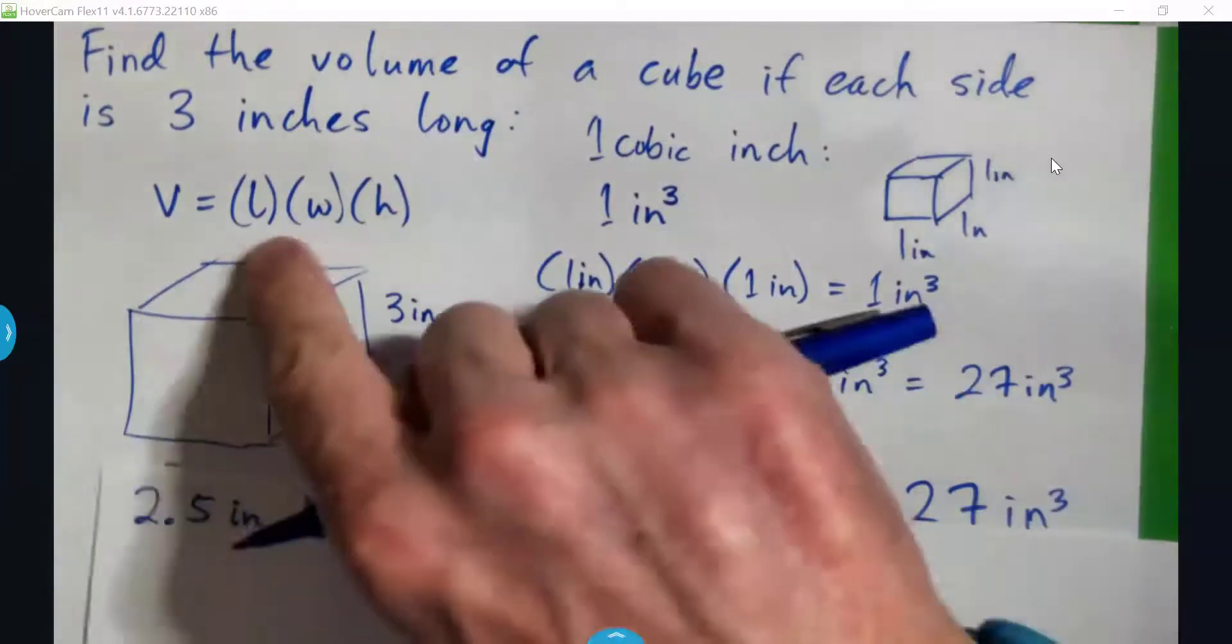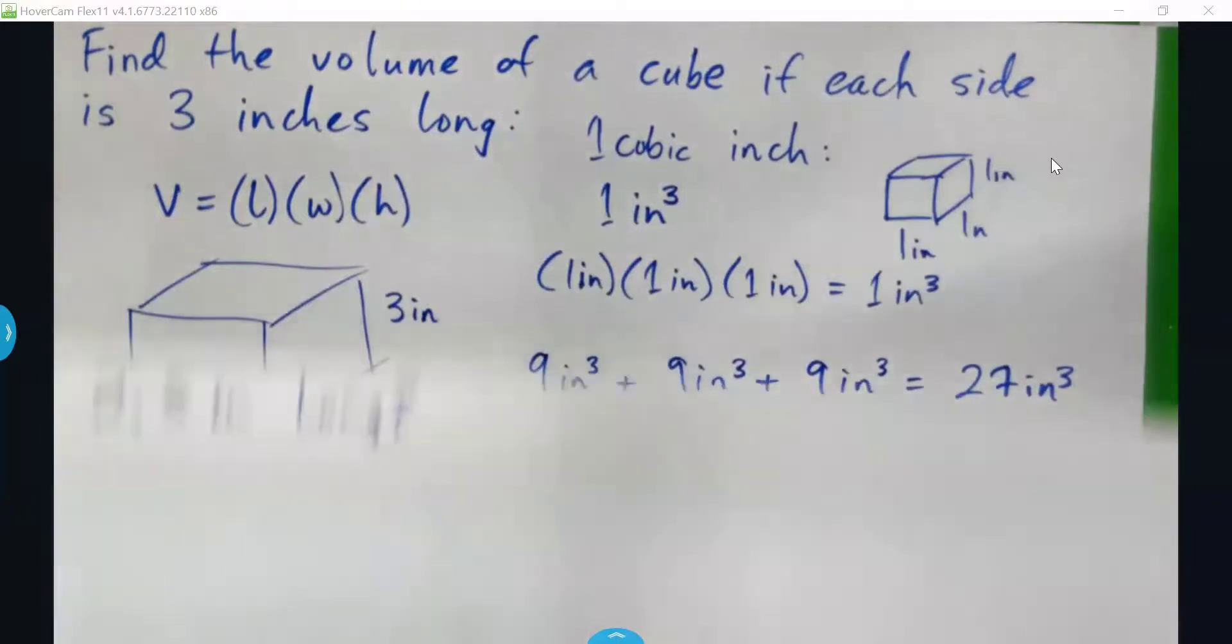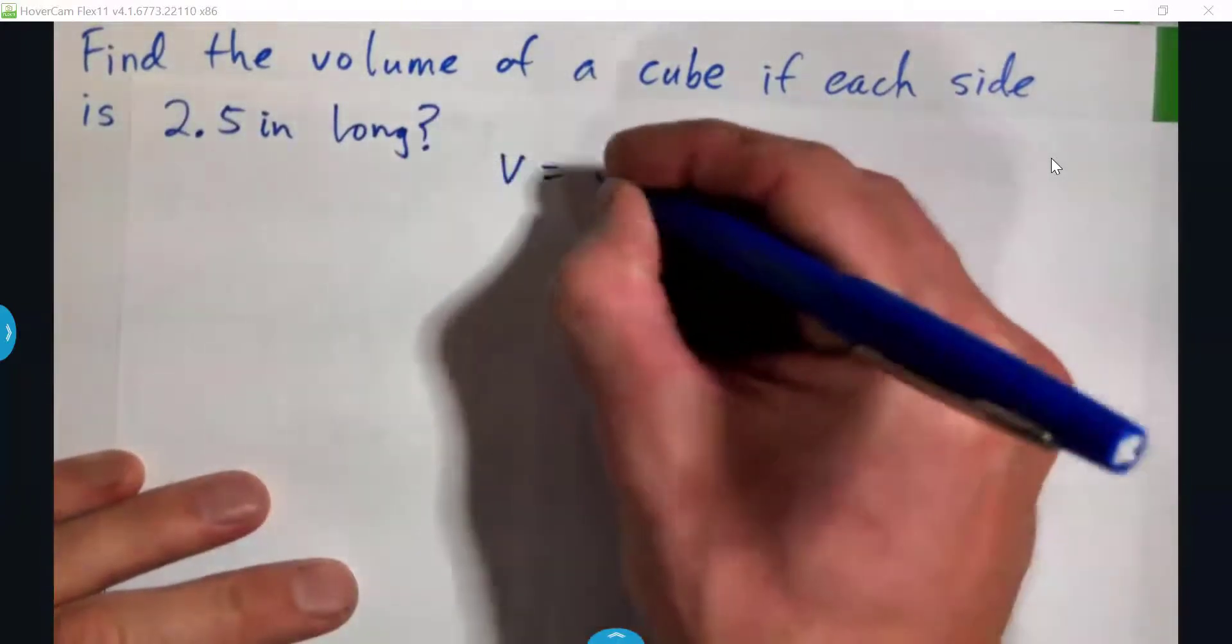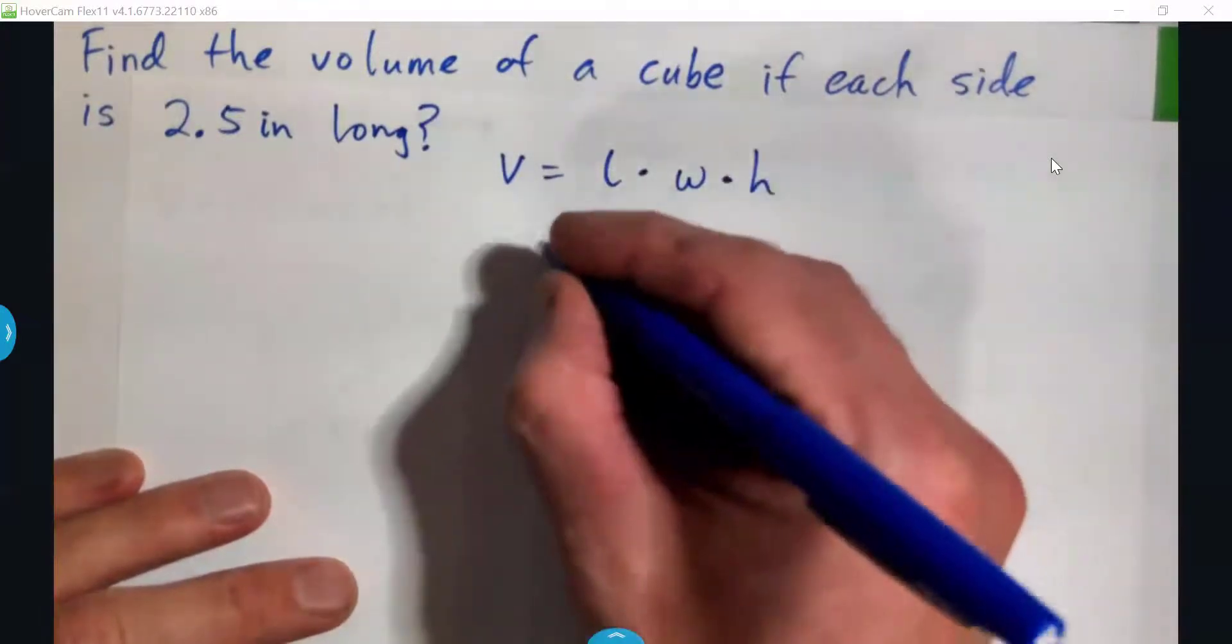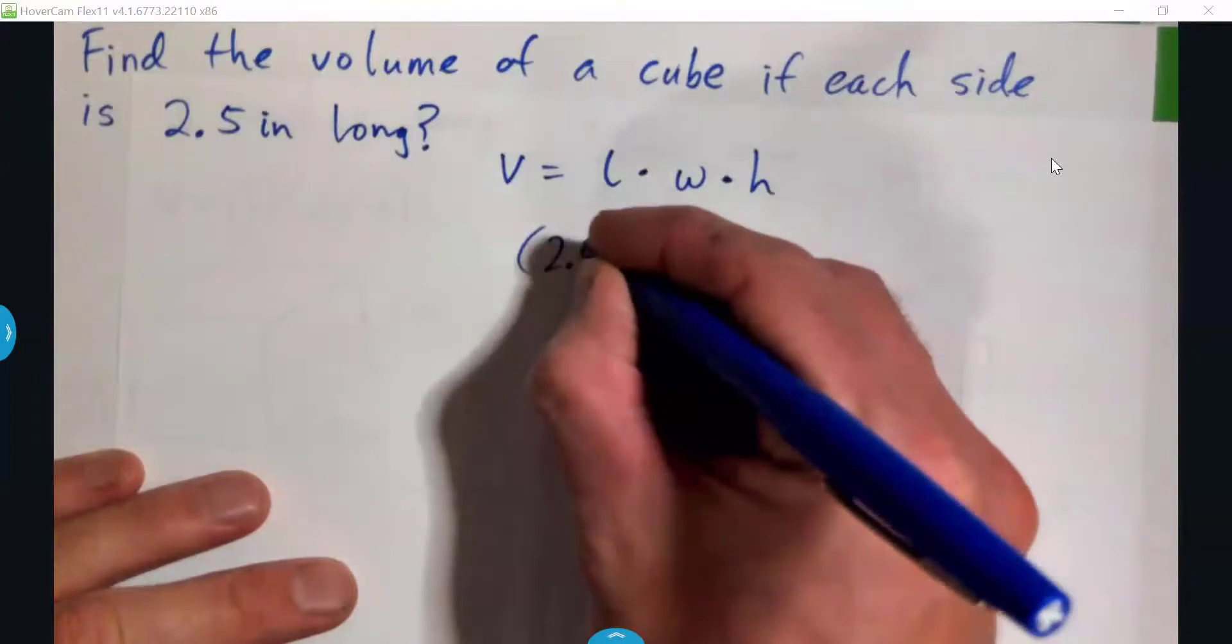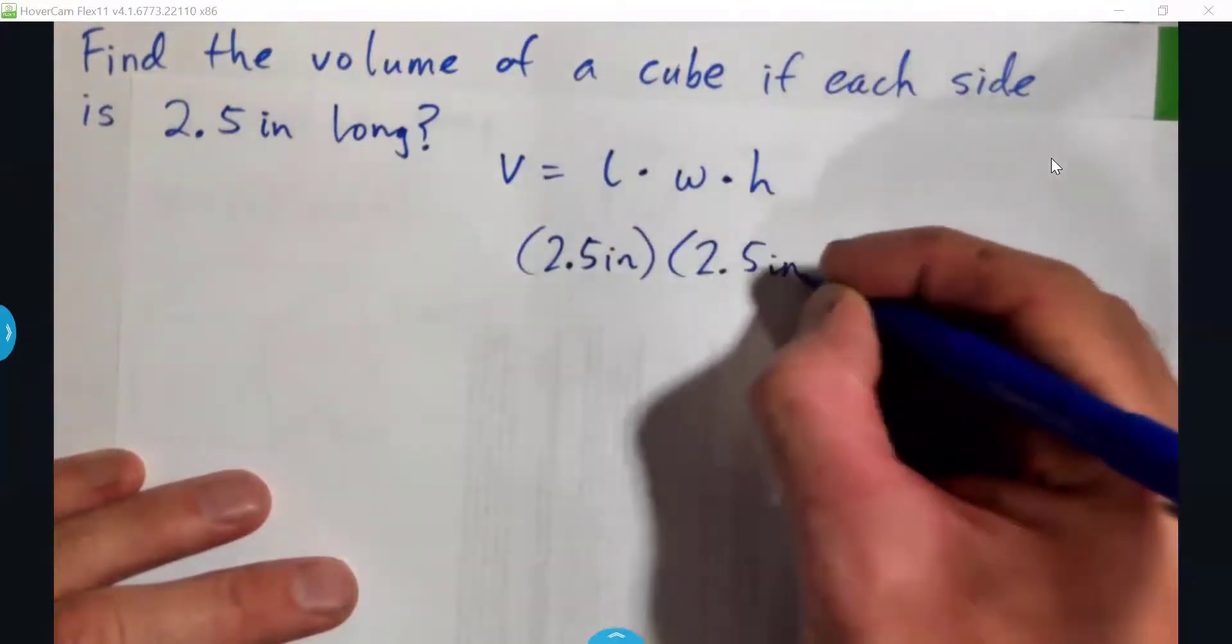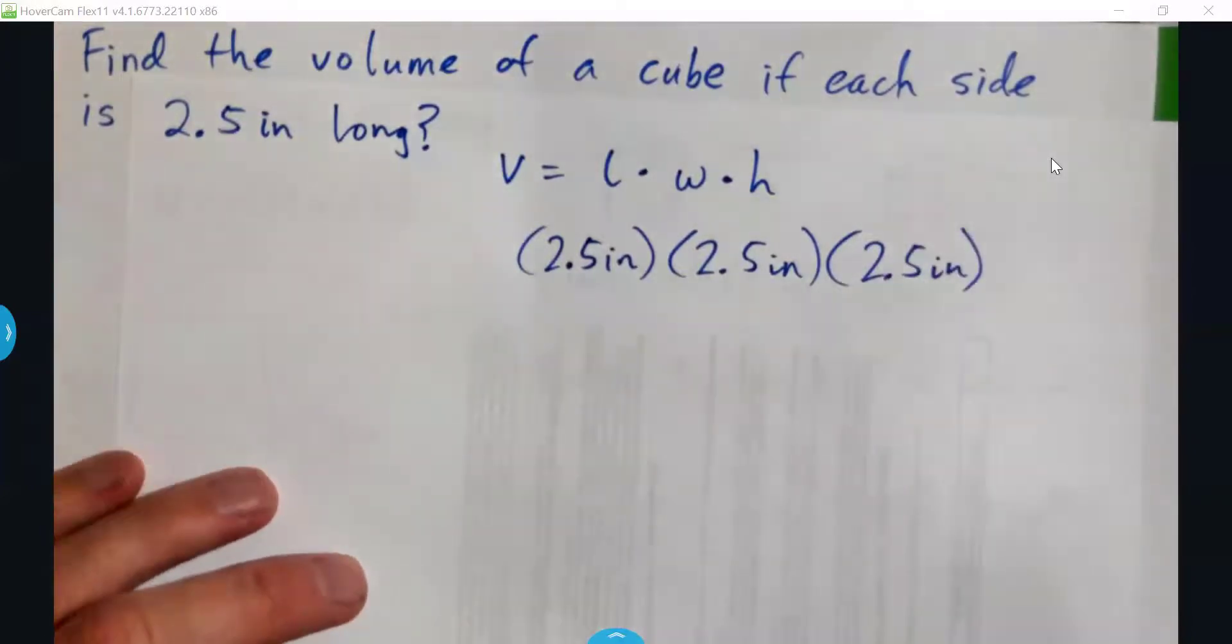where the volume is just the length times the width times the height. And instead of going 3 times 3 times 3, we're just going to go volume is length times width times height, or 2.5 inches times 2.5 inches times 2.5 inches and calculate that, right?